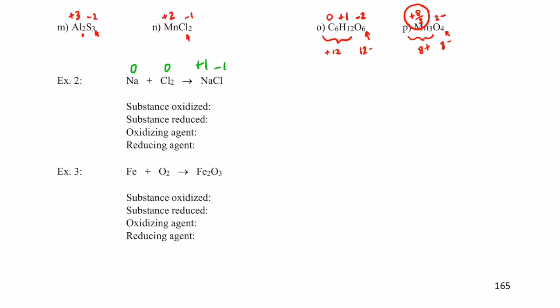We can now determine what was oxidized and reduced. Sodium went from zero to positive one. To do that you have to lose a negative charge — you have to lose electrons. So the substance oxidized was sodium. Chlorine went from zero to negative one. To become negative you need to gain electrons, so the chlorine was the substance reduced. The oxidizing agent is the species that contains the element reduced, so that would be chlorine gas, and the reducing agent is the species that contains the element oxidized, so that would be sodium.